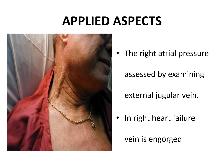Now we will see the applied aspects. The right atrial pressure can be assessed by examining the external jugular vein. In this patient, the external jugular vein is seen engorged. Usually this vein will not be so prominent, but in case of right heart failure, this vein appears to be engorged. That is the first applied aspect.